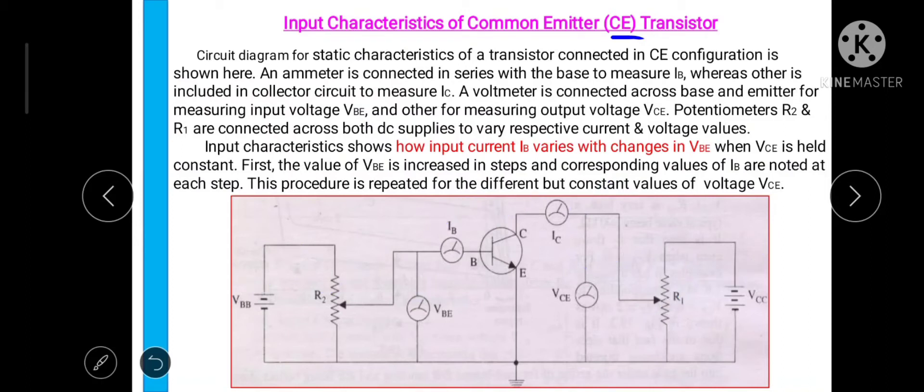Here we have to study the input characteristics of this transistor. So this input characteristic shows how the input current IB varies with changes in input voltage VBE and these changes are taken when the output voltage VCE is held constant. First the value of input voltage VBE is increased in steps and it is measured by using this volt meter and the corresponding values of IB are noted at each step and we have to repeat this procedure for the different but constant values of VCE.